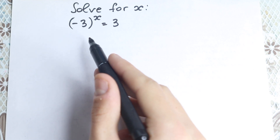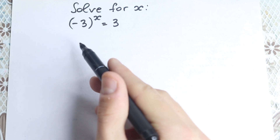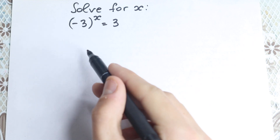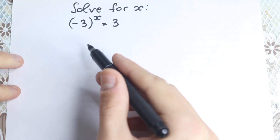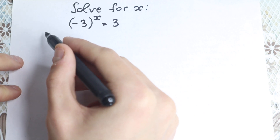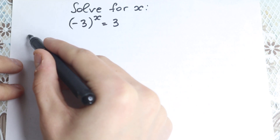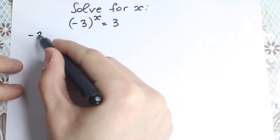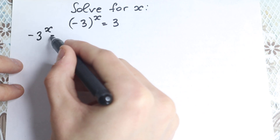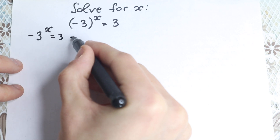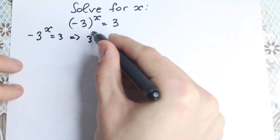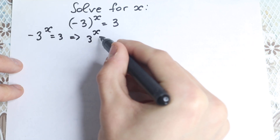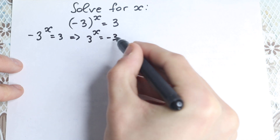This is really tricky and I hope you will enjoy my explanation to this interesting problem. Let's start. For example, if we don't have parentheses — so minus 3 to the x equals 3 — then multiplying by minus 1 gives us 3 to the x equals minus 3.